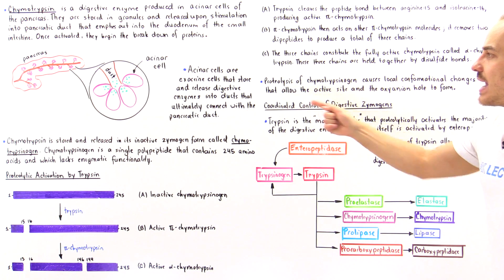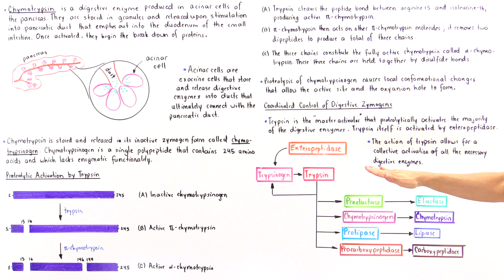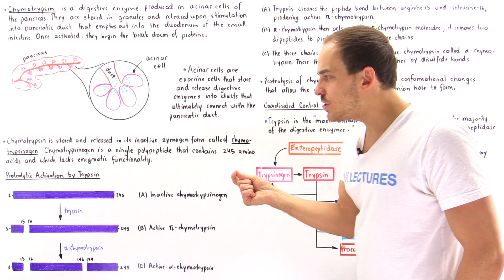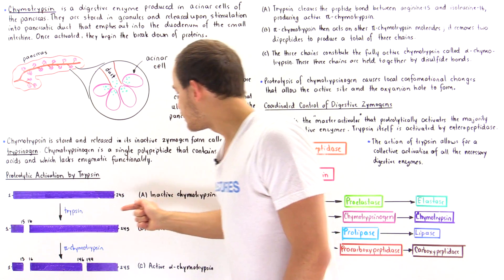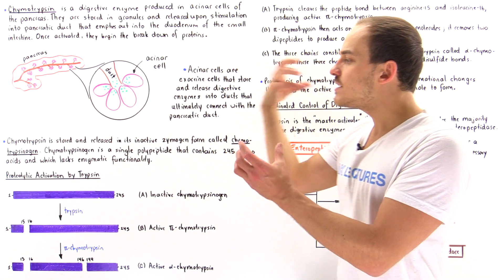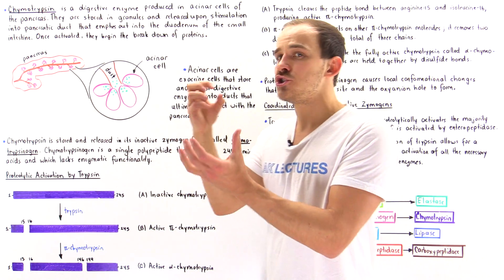Proteolytic activation of chymotrypsin causes a local conformational change that allows both the active site and the oxyanion hole to actually form. The overall structure of chymotrypsin doesn't change dramatically — it is a small, localized change in a specific region of the enzyme.